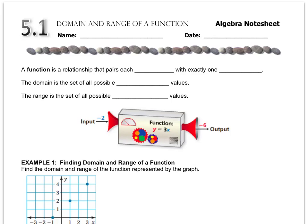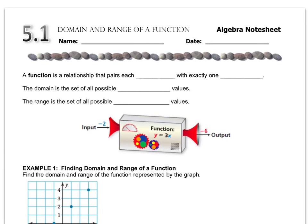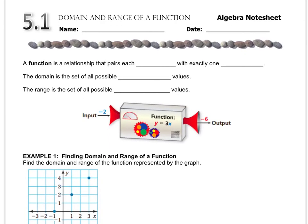In chapter 5 we look at these things called functions, and this lesson has a lot of new vocabulary. Function is one of them, and a function is a relationship that pairs each input with exactly one output.